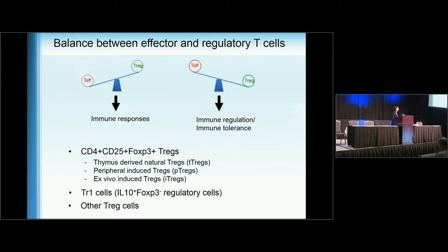There are several subtypes now being discovered in Tregs. The most significant one is the CD4-positive, CD25-positive, FOXP3-positive Tregs, and that's the one I will be emphasizing today. These Tregs can be derived from the thymus as natural Tregs, but they can also be induced peripherally by antigen encounter. There are also ex vivo-induced Tregs, whose phenotype is sometimes unstable when introduced in vivo. More recently, there are also TR1 cells, which are IL-10-positive FOXP3-negative Treg cell types.